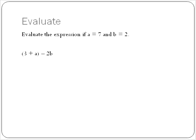Let's look at one more expression. If a is equal to 7 and b is equal to 2, we're going to evaluate this expression. We take the value of 7 and substitute it where we see a, and take the value of 2 and substitute it everywhere we see b. We have 3 plus 7 minus 2 times 2.